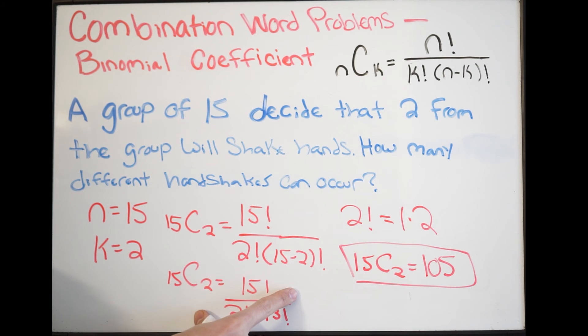We can enter this into our calculator just like this. We have the factorial operation in our calculator. When you plug it in, you should get 105. This tells you that there are 105 different ways of shaking hands in the group when only 2 shake hands at a time.